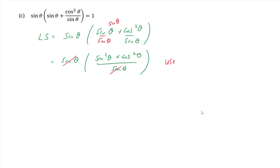Now we can use the Pythagorean identity: sin²θ plus cos²θ is equal to 1. So we're left with 1 over sinθ — wait, the numerator becomes 1, and we have proven the identity.